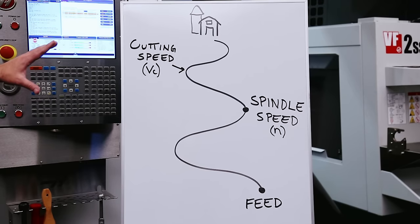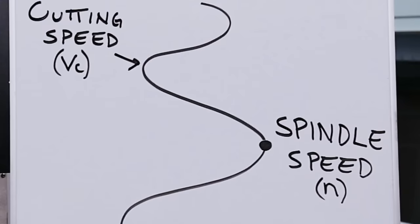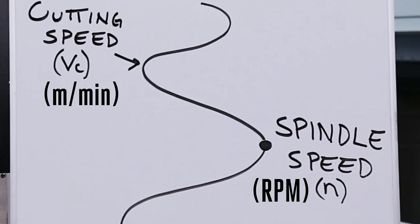In machinist's talk, if we're talking about speeds — like speeds and feeds — we can be talking about one of two different things: we're either talking about cutting speed or spindle speed. Our cutting speed, VC, is our surface meters per minute — the speed our tool is turning at where the rubber meets the road, where the tool meets the part. And our spindle speed is simply our revolutions per minute, our RPM.